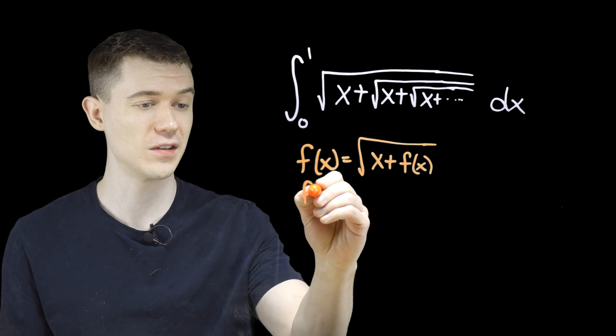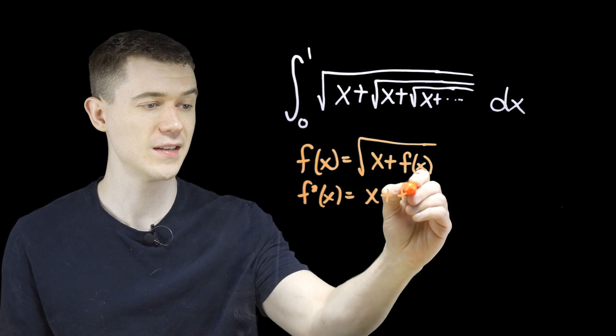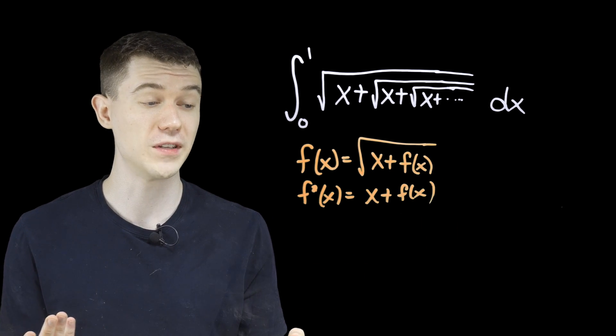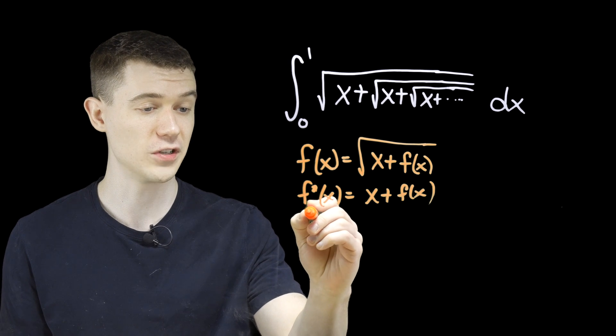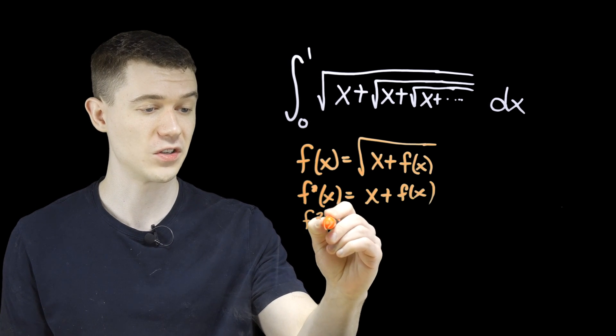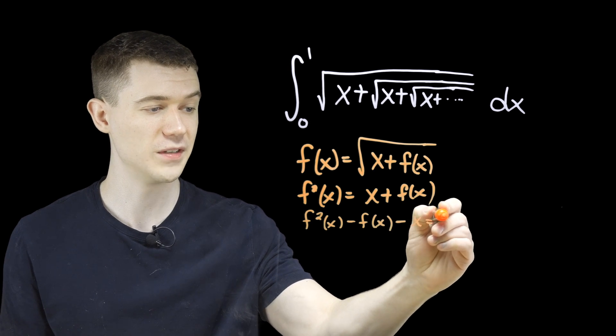You could square both sides, so f squared of x, this would be x plus f of x. And then the typical way we solve a quadratic equation is we move everything to one side. So just make this f squared minus f of x minus x equals zero.